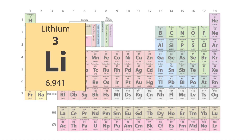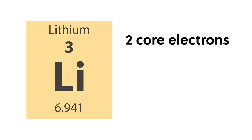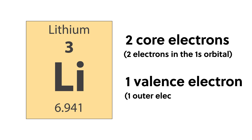We can perform a simple example calculation of effective nuclear charge by considering one atom of elemental lithium. Lithium has an atomic number of three, meaning it has three protons in its nucleus. Therefore, its actual nuclear charge is three. Lithium has two core electrons in the 1s orbital and one valence electron in the 2s orbital.